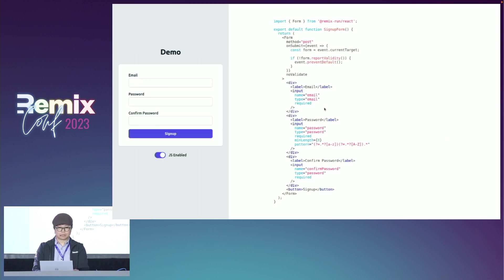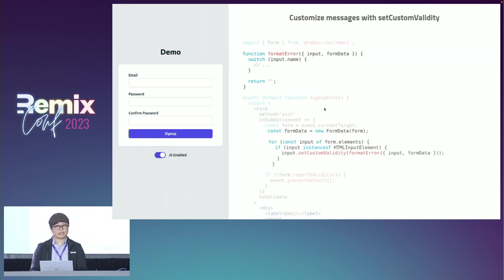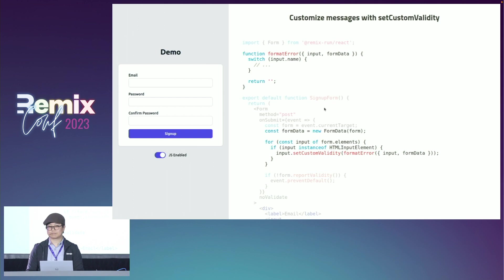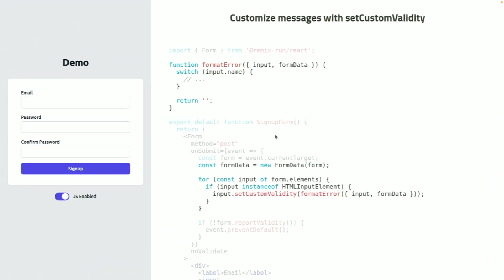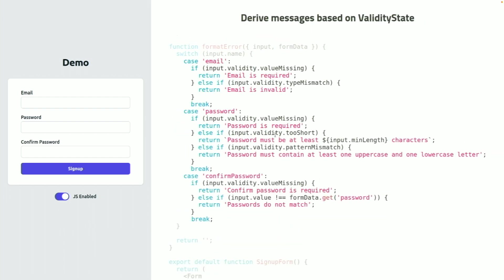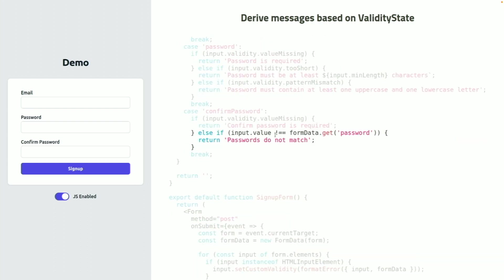Now let's go back to the example and see how this works. Here, we define a formatError function that derives the message based on the input element and the form data object. Then we loop over each input element and pass the result to the setCustomValidity method. Inside this formatError function, we are simply checking both the name and the valid state of the input element. We are also comparing the password and the confirmed password fields manually, because there's no validation attribute that covers this case. And now, if I click on the submit button again, the error message is updated.